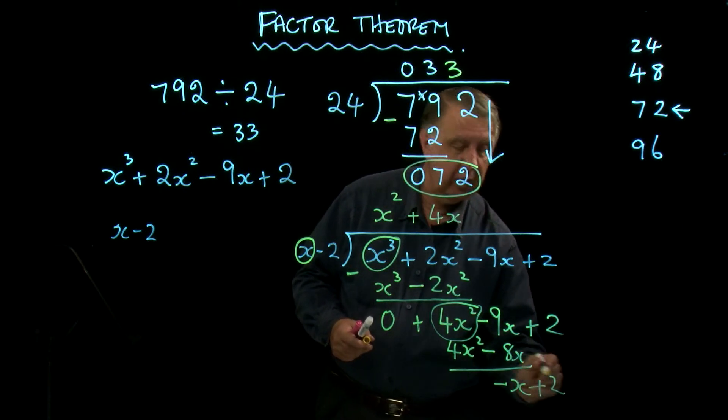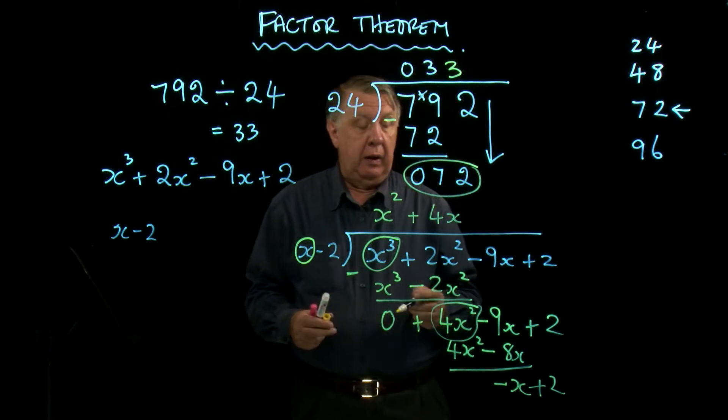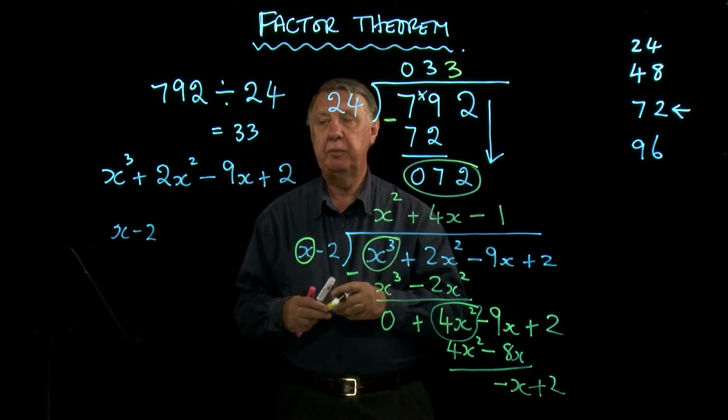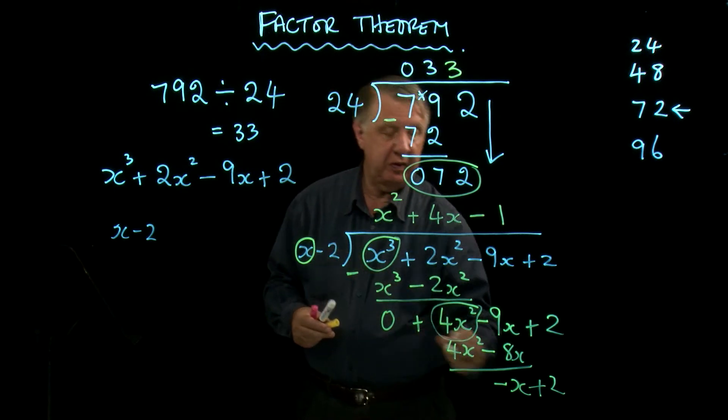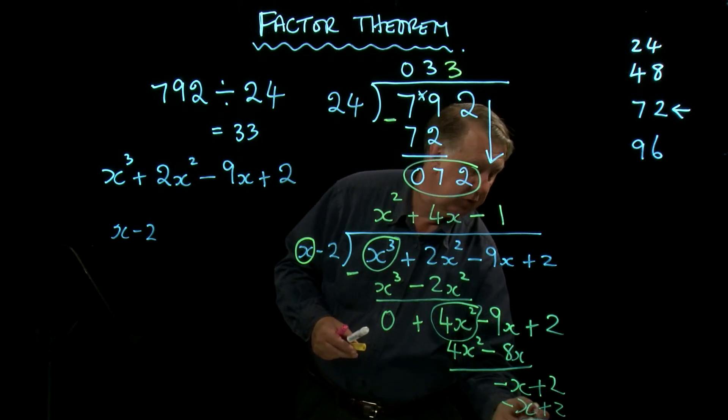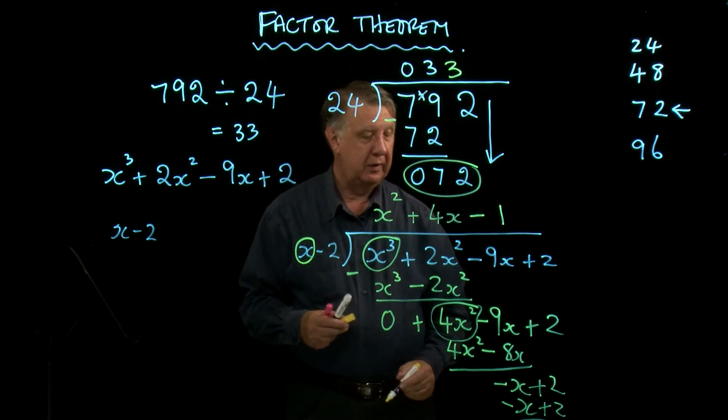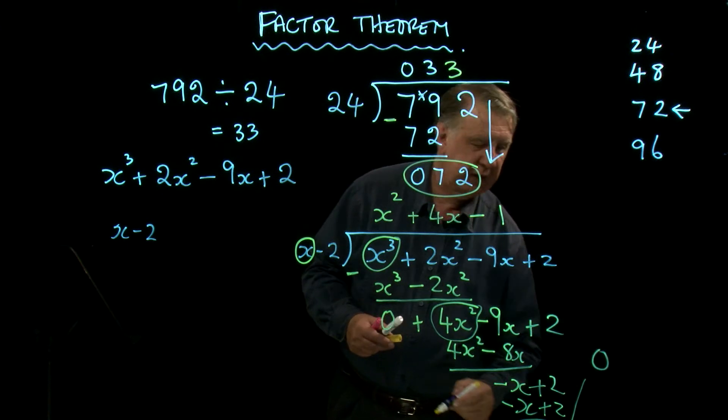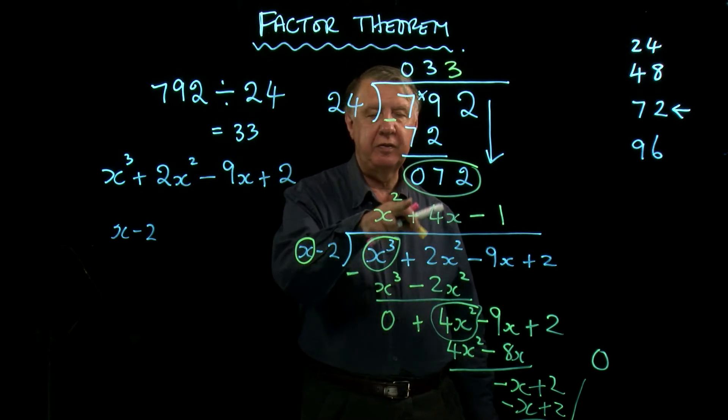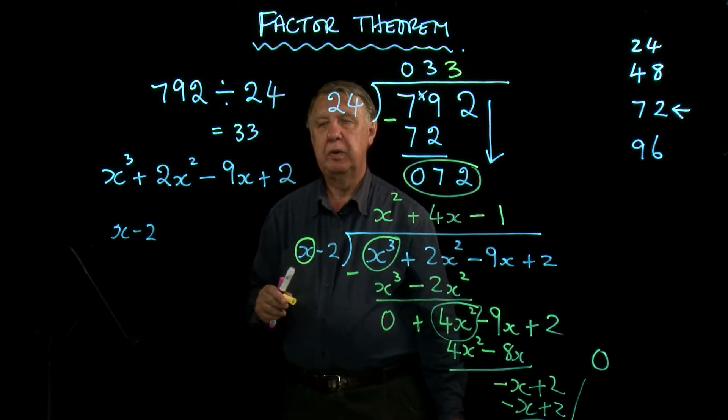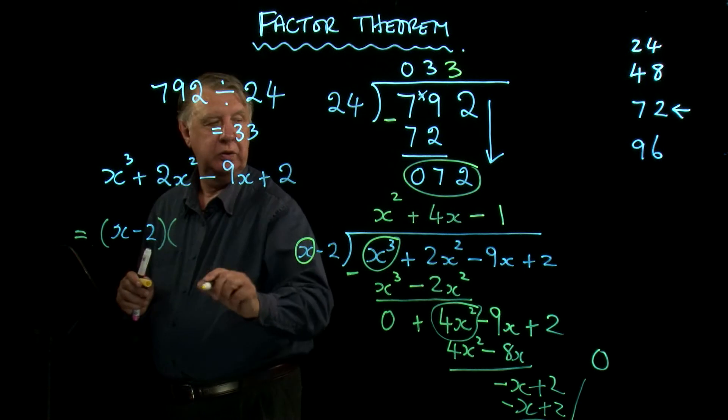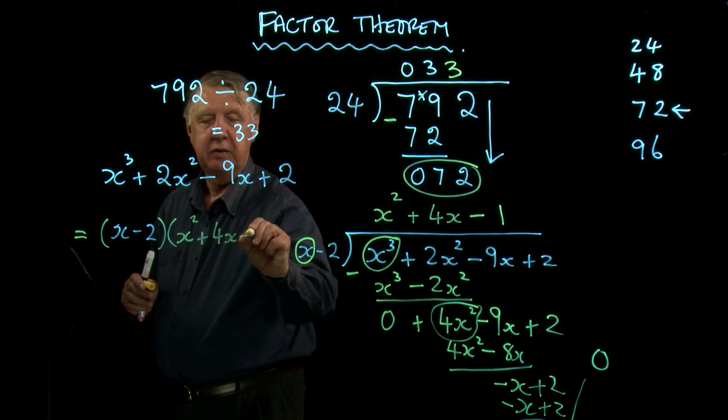Anything up here, I bring down. And finally, x into -x is -1. -1 times this is -x. -1 times -2 is +2. Subtract. It comes to nothing. So I have shown then that x - 2 divides exactly into this. In other words, I have proved that this expression here is equal to (x - 2) times (x² + 4x - 1).